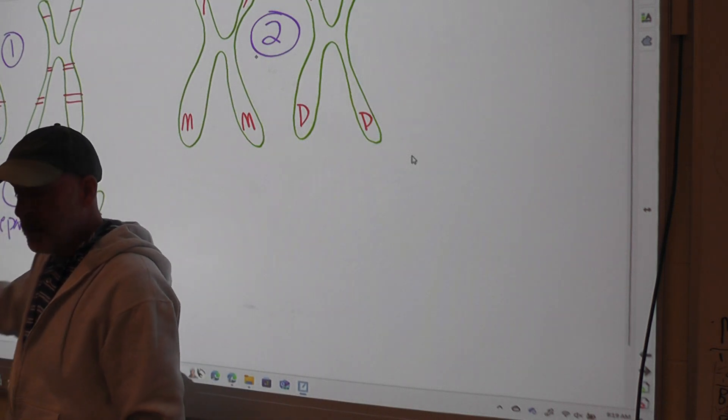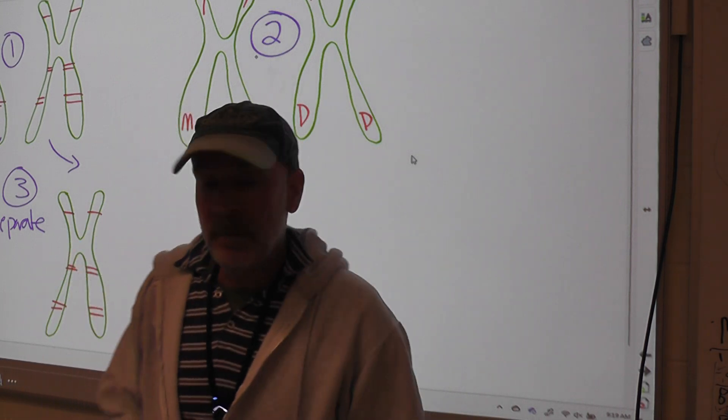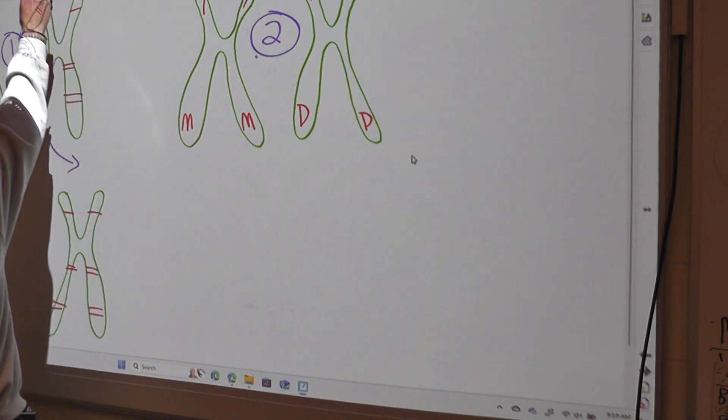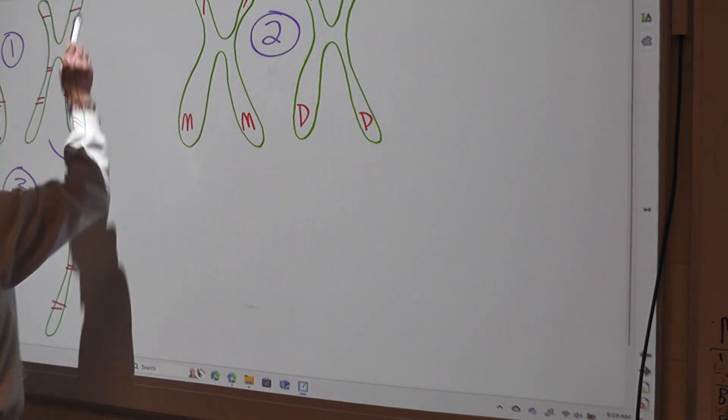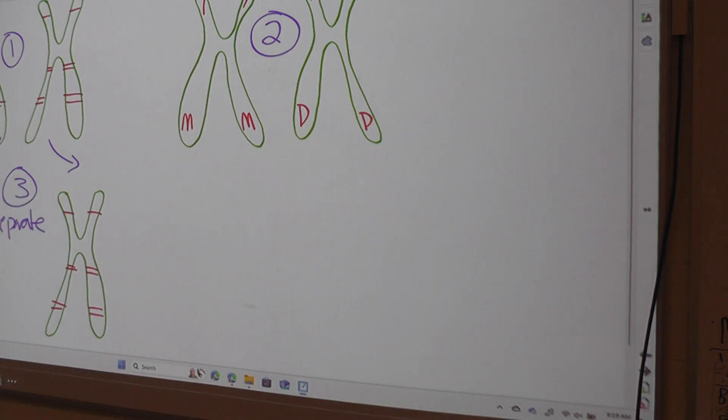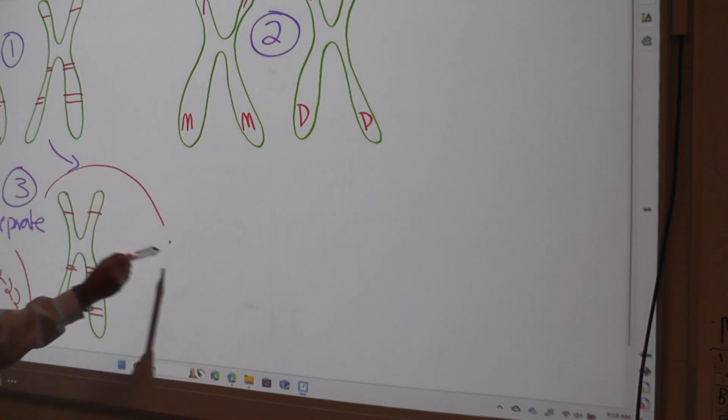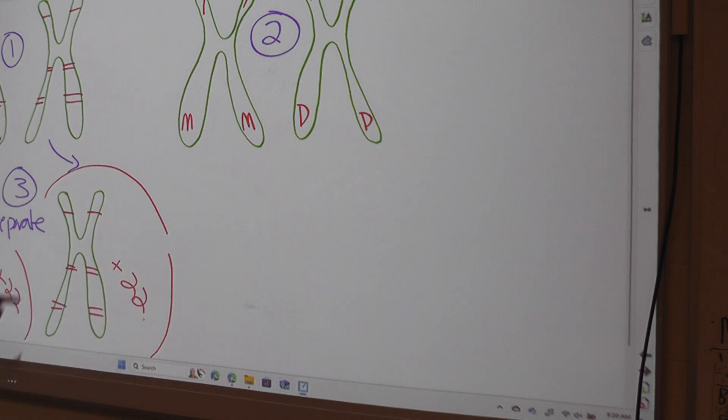And what you'll end up with is a pile of chromosome number ones along with 22 other chromosomes, and a pile of chromosome number ones along with 22 other chromosomes. And there's going to be a number one, a number two, a number three, a number four, a number five, all the way through the last one. Same with this.